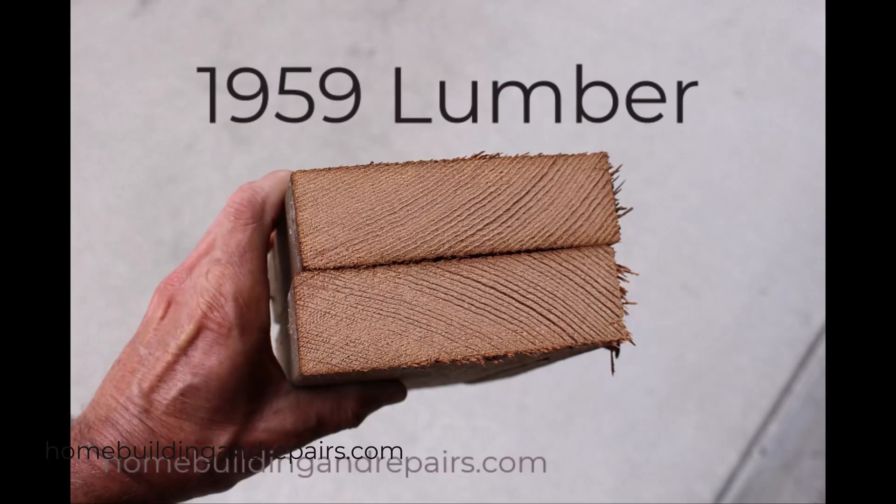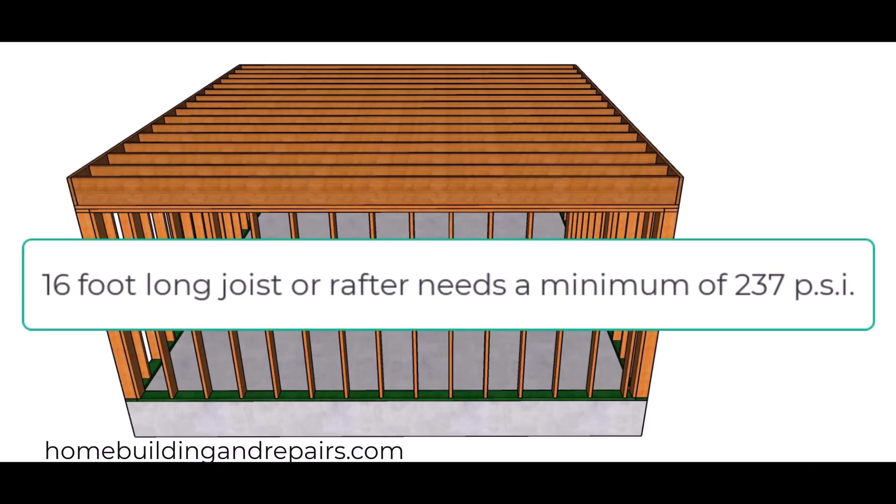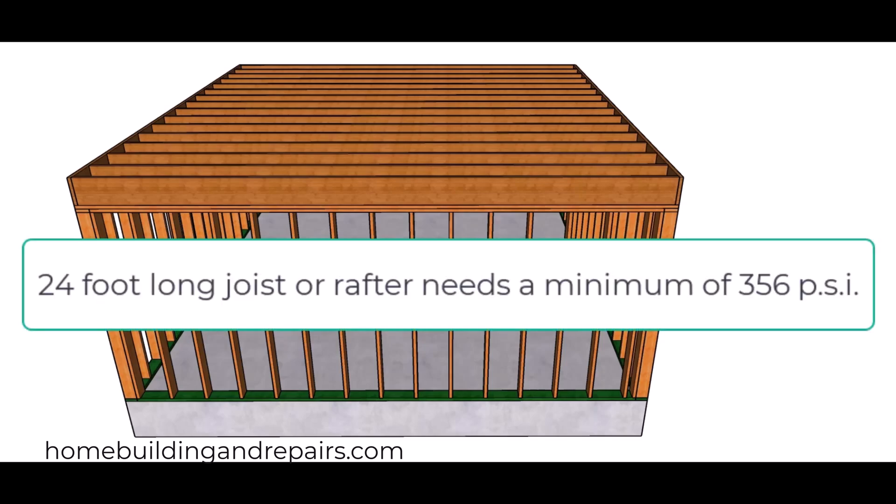According to them, the minimum compression PSI rating for a 16-foot long floor joist is going to be 237 PSI, and for a longer floor joist like a 24-foot long floor joist, it's going to be 356 PSI. So the minimum compression rating will vary depending upon the length of the lumber.